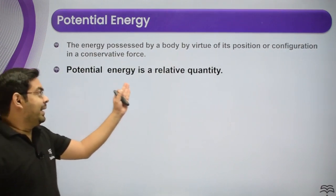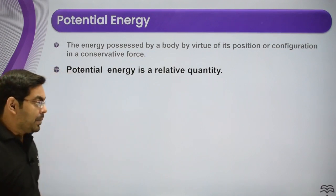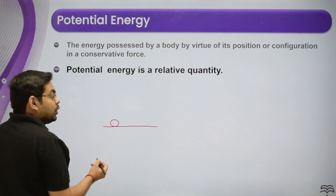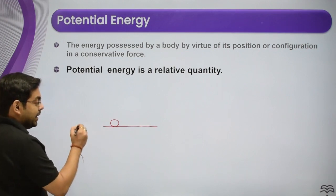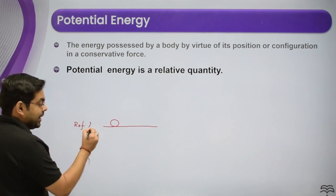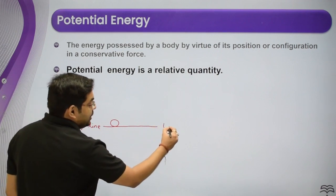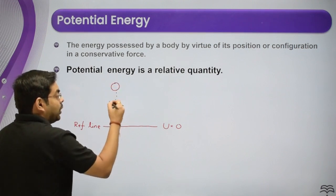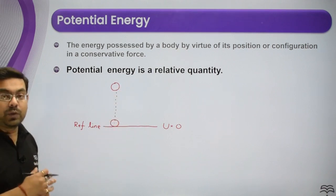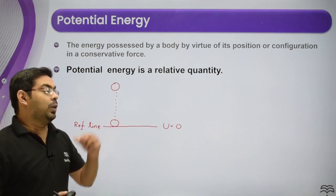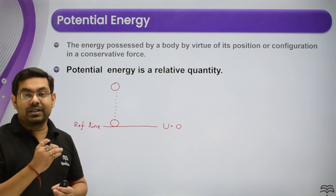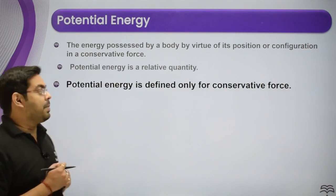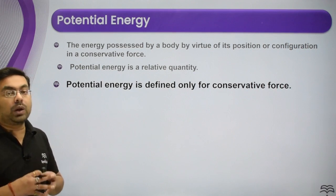Next point: potential energy is a relative quantity. If a body is at ground level, we take that as zero — this line is called the reference line. If we set potential energy U = 0 here, then at some height h above, we can define the potential energy. We always calculate potential energy with respect to a reference.